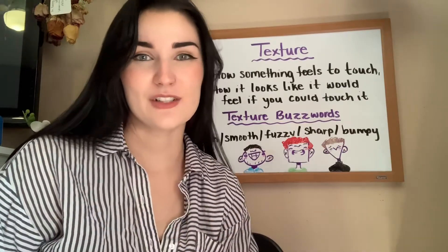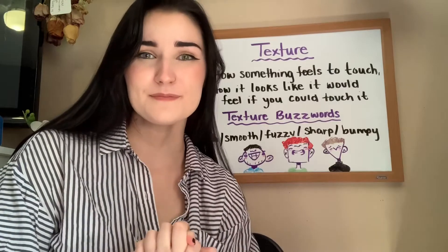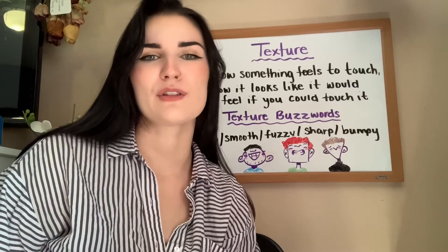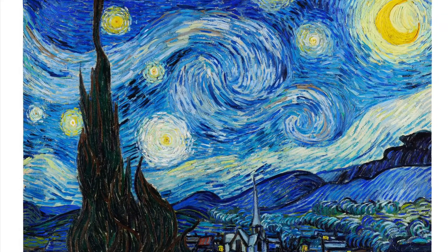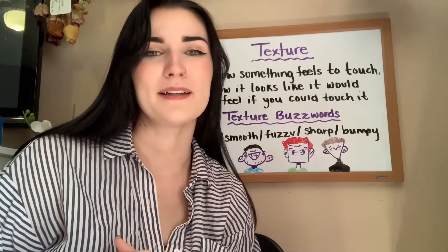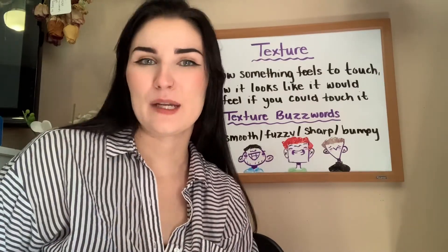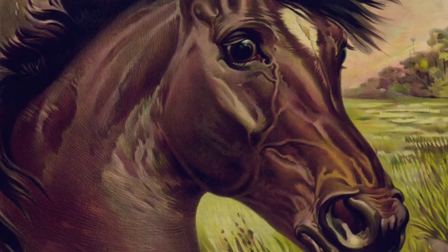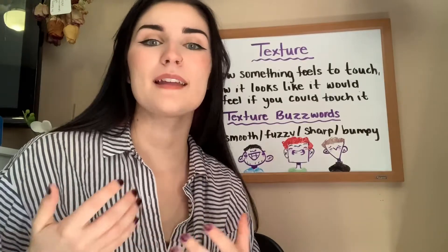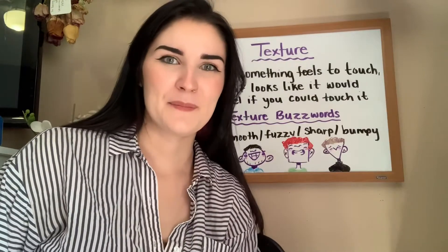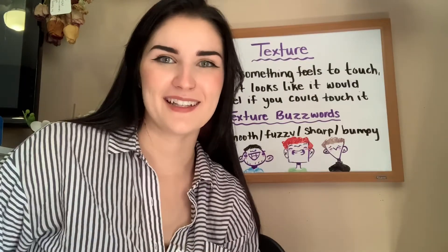2D textures can be broken down and classified into two different ways. They can be implied — if we look at Van Gogh's Starry Night, those thick brush strokes create an implied texture we can still pick up on. Or if we look at a painting of an animal, the fur is realistic to what exists in nature, but because it is a 2D painting simulating something real, we call that a simulated texture — it's simulating what that texture would actually look like in real life.